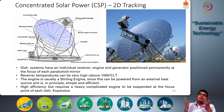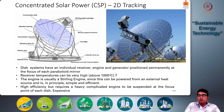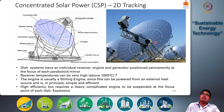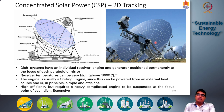This system has high efficiency but requires a heavy, complicated engine to be suspended at the focus point of each individual mirror, making it somewhat expensive. Instead of a centralized heat-to-power conversion system as in a steam turbine, you have an individual engine suspended at the focus of each mirror, individually producing electricity through a generator. This significantly increases capital cost, so while very efficient, it may be more expensive than simple parabolic trough mirrors.